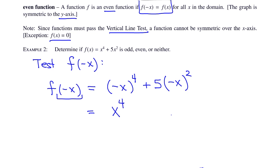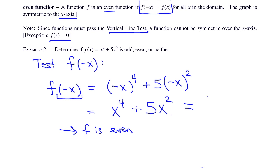On the right side, negative x squared — again raised to an even power — gives plus 5 times x squared. So we have x to the fourth plus 5x squared, which is the original function. If you get the original function after evaluating at negative x, that tells us f is even.